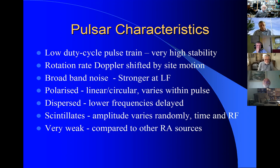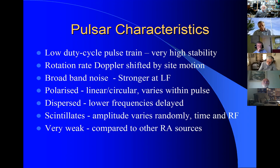The signal is dispersed, meaning that the lower frequencies arrive after the higher frequencies, and this is due to interaction with free electrons on the path. They scintillate enormously in both amplitude, time, and frequency. And they're very weak compared to other radio astronomy sources.